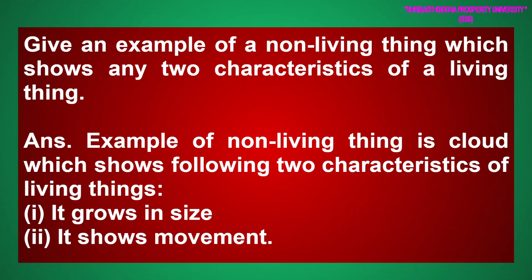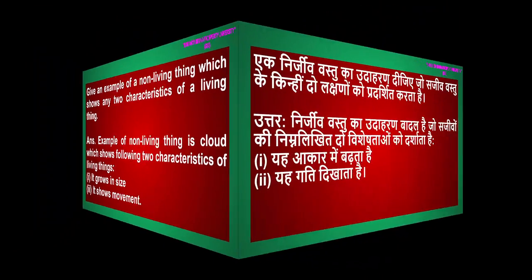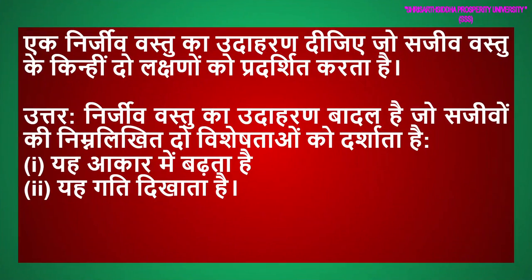Give an example of a non-living thing which shows any two characteristics of a living thing. Answer. An example of a non-living thing is a cloud, which shows the following two characteristics of living things: it grows in size, and it shows movement. निर्जीव वस्तु का उदाहरण बादल है, जो जीवित चीज़ों की दो विशेषताएं दर्शाता है: यह आकार में बढ़ता है और यह गति दिखाता है।